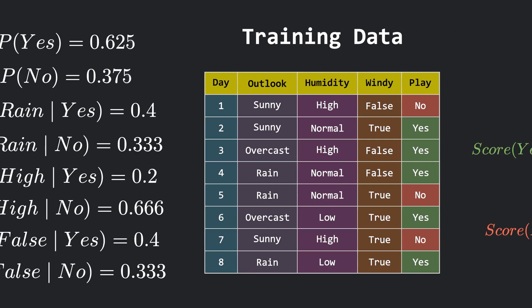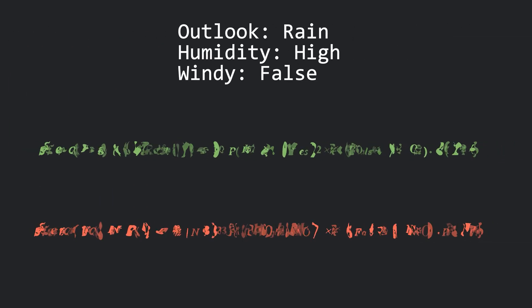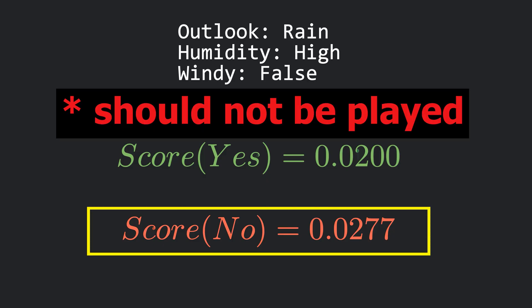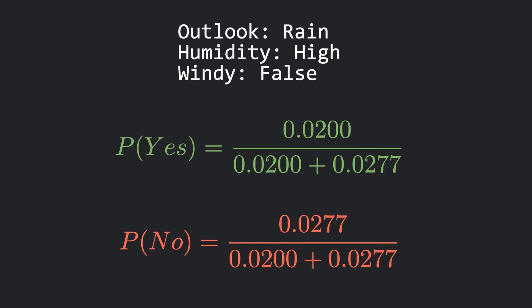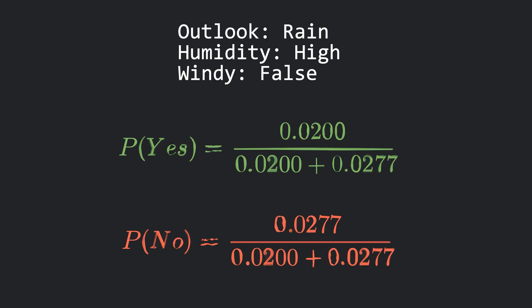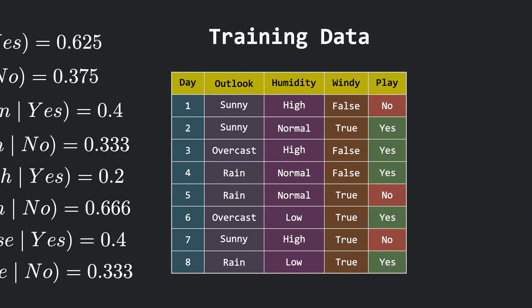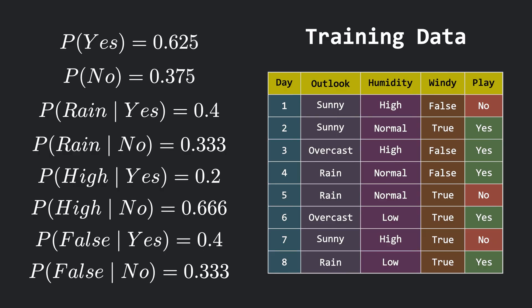Now plug these values into the equation for scores. And you should get these results. Here the score for no is higher, so that means the game should be played. Now if you want to find the actual probability values, just normalize the scores by dividing each by the total of both. If you add these two normalized values, you will get 1, which makes perfect sense.